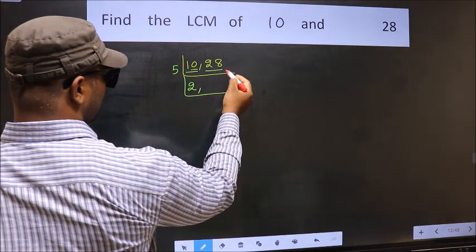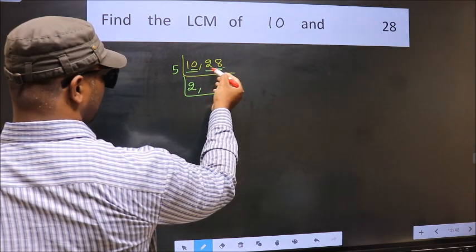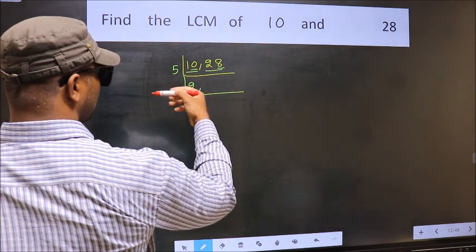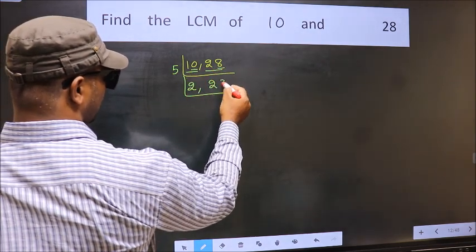Now the other number, 28. Last digit is neither 0 nor 5, so this number is not divisible by 5. So you write it down as it is.